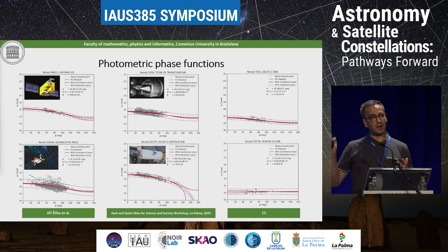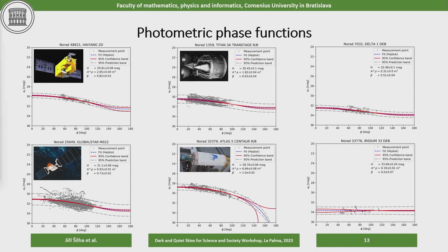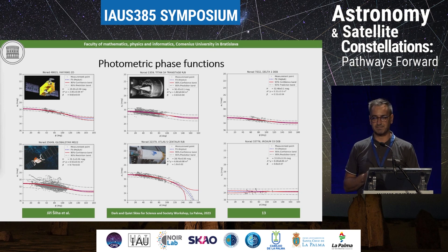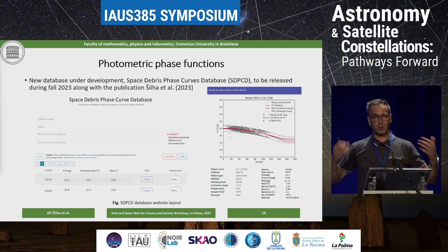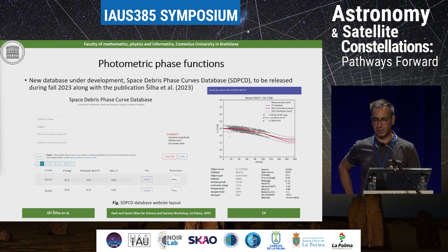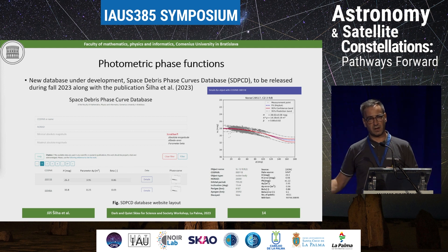We processed 600 objects. Examples include a typical boxwing satellite like Globalstar (which has a wide range of prediction bands due to rotation), upper stages such as Titan 3A and Atlas 5 Centaur (a good calibration object), and debris objects — including a fragment from the Iridium 33 collision, which shows very high specular reflection behavior. All processed objects will be available in the photometric catalog along with the light curve catalog and phase curve catalog, to be published online this fall, with beta, area, albedo parameters, and prediction bands downloadable.